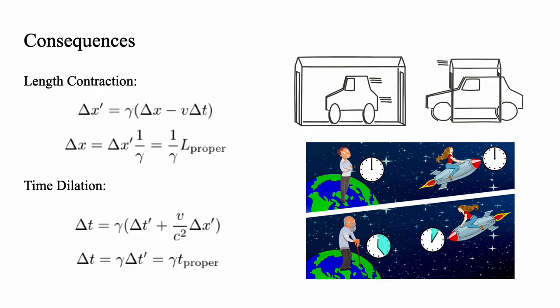For time dilation, a person at rest with respect to an object does not measure a position difference in his frame, meaning delta x prime is zero. But he will measure a time difference, and you will measure a time difference that will be a factor of gamma larger than his time difference, hence the word dilation.